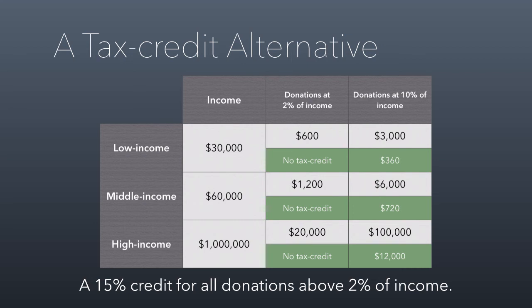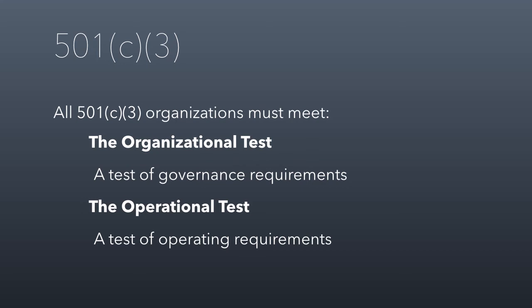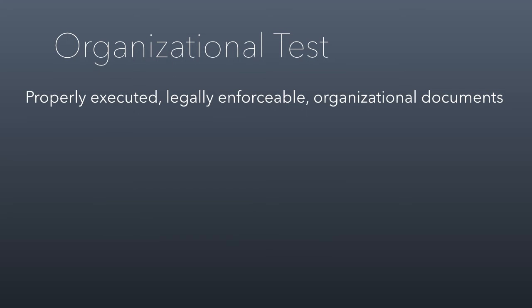Section 501c3 covers all charitable organizations under the tax code. All 501c3s have to pass two tests: the organizational test and the operational test. The organizational test incorporates all the governance requirements associated with being a charity — looking at your documents and how you're organized. The operational test is about what you do every day.